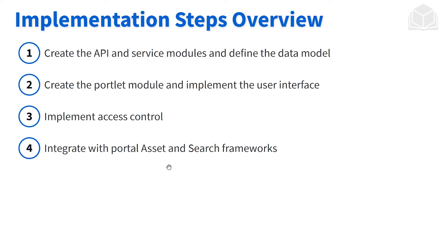From there, once we take care of the model layer, we're going to head over and implement the controller and the view layer — we're going to be creating our portlet module. Once we have that taken care of, we'll then implement some permission checking, or access control, making sure that users who are able to do things with the application have the proper access, and those who do not, do not. And then finally, we're going to implement our assignments into Liferay's asset framework and search framework. Even though it looks like four easy steps, we're going to break these things down into smaller steps as we go.